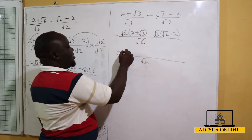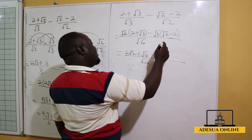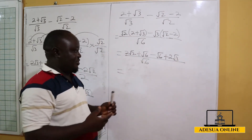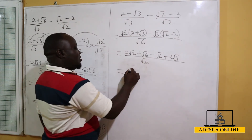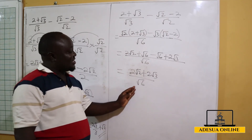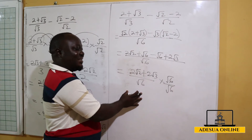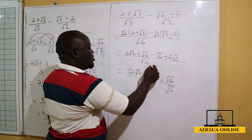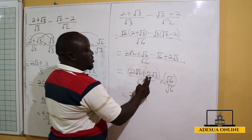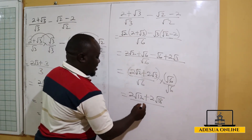Expanding: root 2 times root 2 gives 2, plus root 2 times root 3 gives root 6. Minus root 3 times root 2 gives root 6, and minus root 3 times minus 2 gives positive 2 root 3. The middle terms root 6 minus root 6 equal zero, leaving 2 root 2 plus 2 root 3 all over root 6. This is still irrational, so we rationalize by multiplying by root 6 over root 6, giving denominator 6.